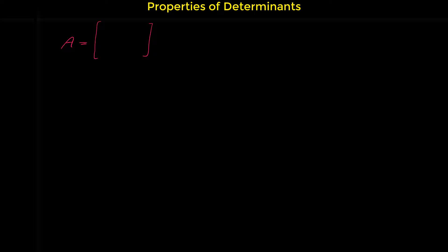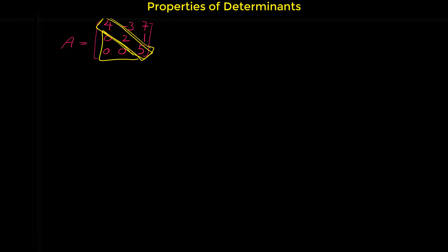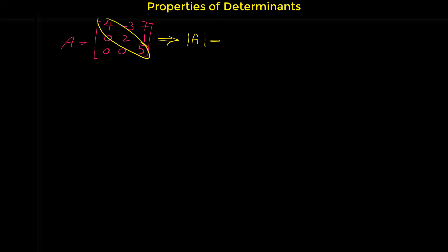Let me show you an example. Consider this matrix: 4, -3, 7, 0, 2, 1, 0, 0, 5. This matrix is upper triangular because all the elements below the main diagonal are zero. When we have upper triangular, lower triangular, or diagonal matrices, the determinant is equal to the product of the elements of the main diagonal, so you don't need to use the regular formula.